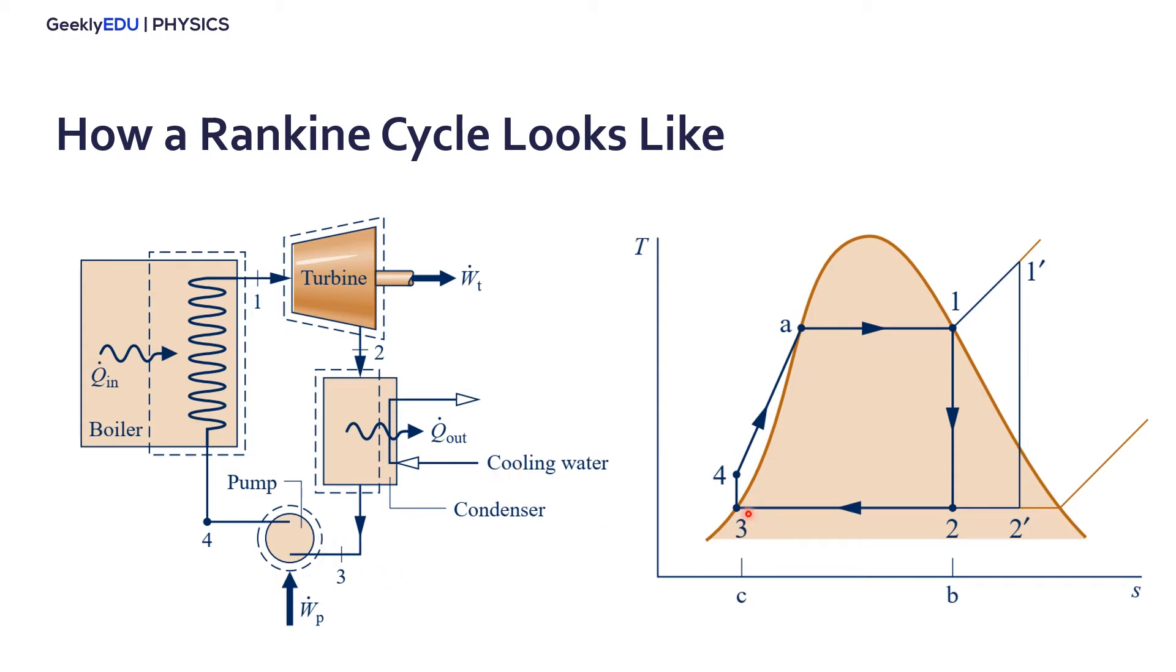At this point we need a saturated liquid or it can be generally a little bit below this point here. So we have liquid to enter the pump. And from the pump we increase the pressure of the fluid. We add work to the pump to increase the pressure. And we reach another constant pressure line, this second orange line here.